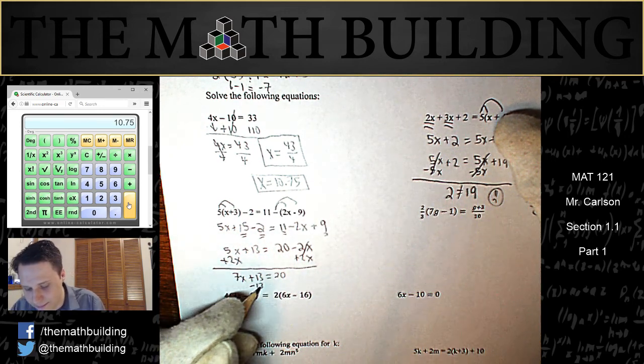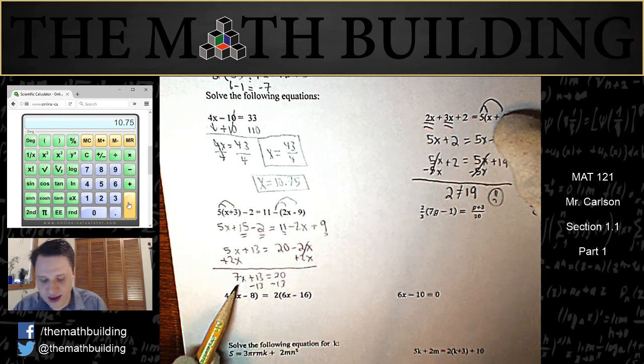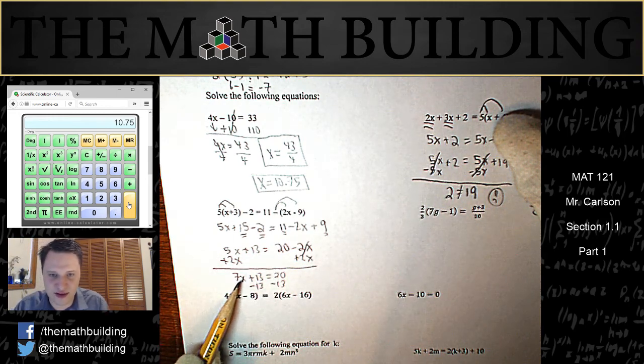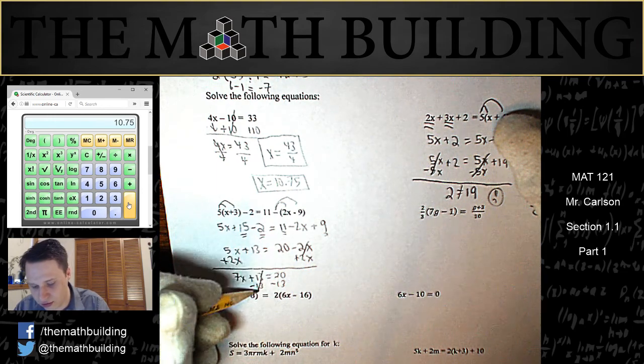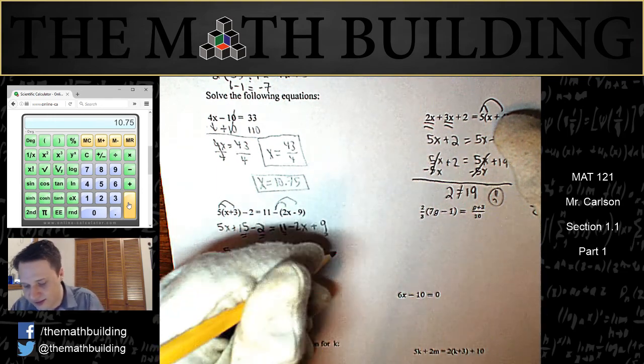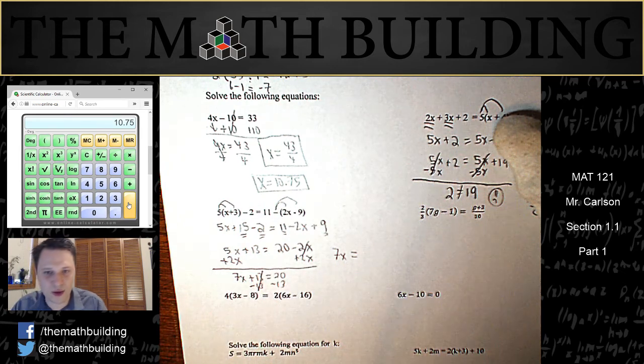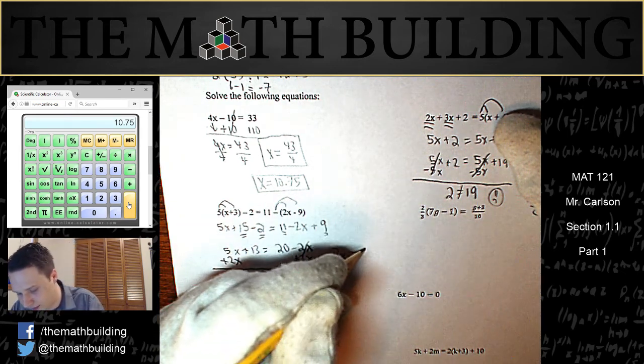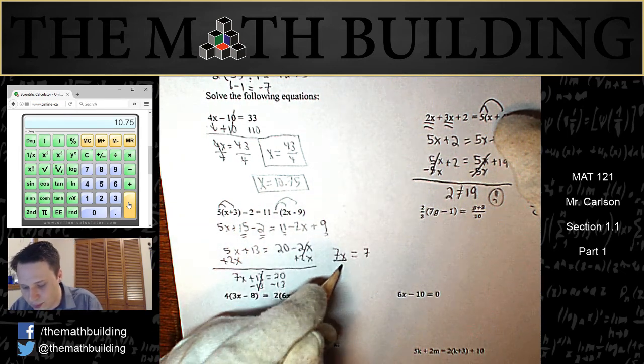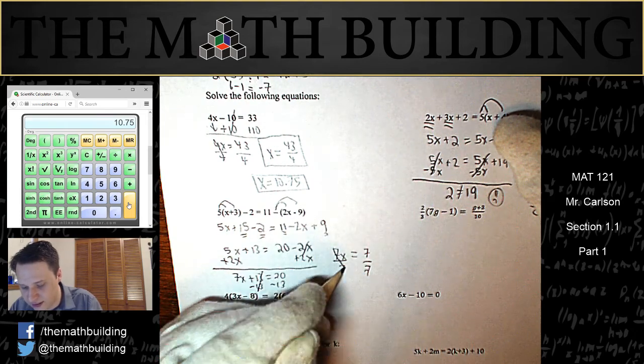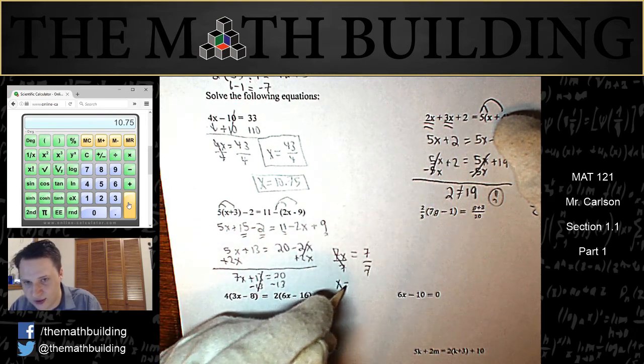Almost there. Let's subtract 13. Now that we have all the x's on one side, we want to isolate that x right there, so subtract 13 on both sides. On the left hand side I keep the 7x, and on the right hand side, 20 minus 13 is equal to 7. One step away, divide both sides by 7, and we get the answer x is equal to 1.